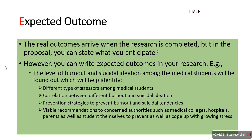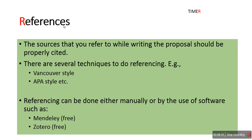The last component is R — References. References include the sources you referred to while writing the proposal, and these should be properly cited. There are different referencing techniques; the most commonly used are the Vancouver style, which is a numbered style, and the APA style, which is an author-and-date style.